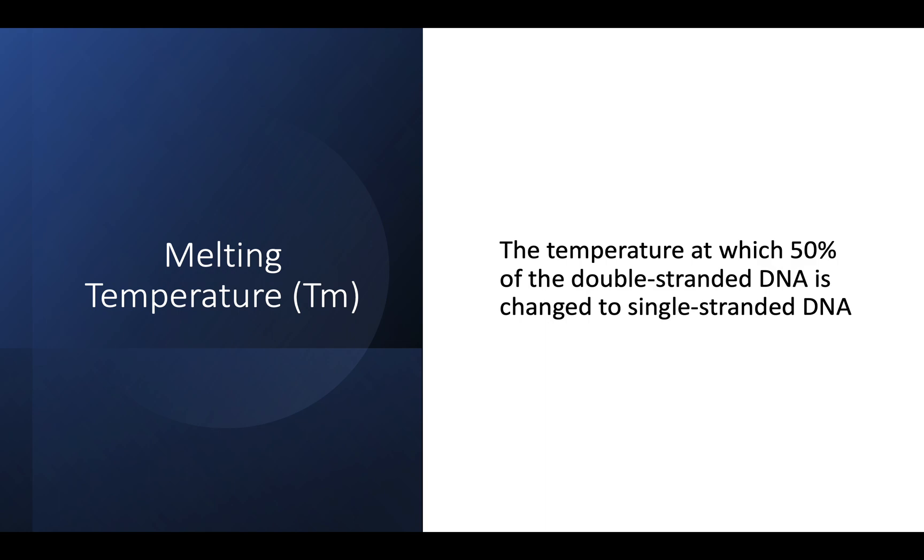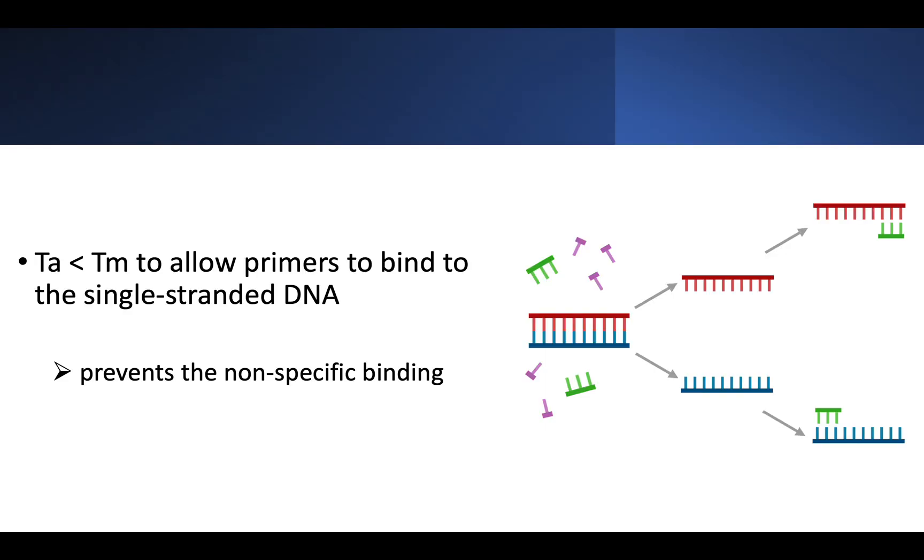So in conventional PCR, the annealing temperature is usually lower than the melting temperature of the primer in order to allow both forward and reverse primers to bind to a single DNA. Here we can see that this template DNA has undergone denaturation in the denaturation step. So in annealing step, both forward and reverse primers are bound to a single-stranded template DNA.